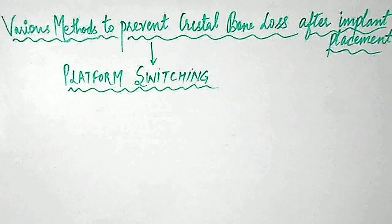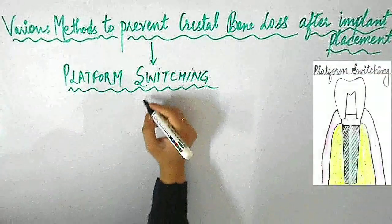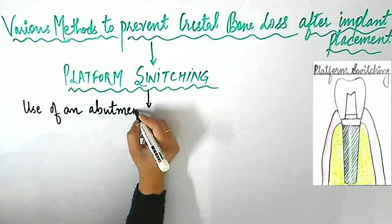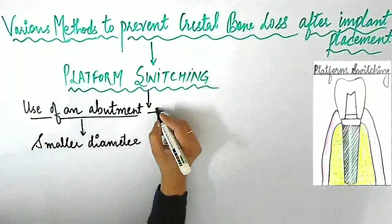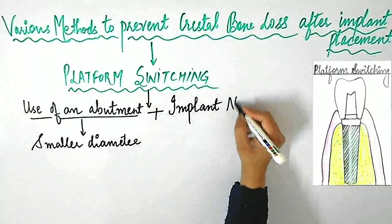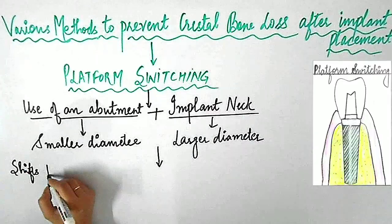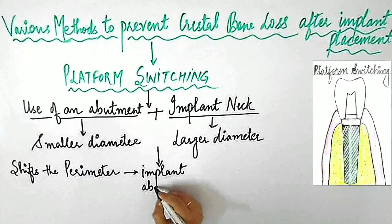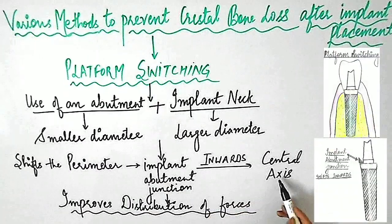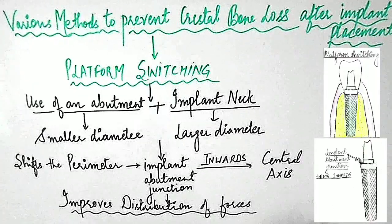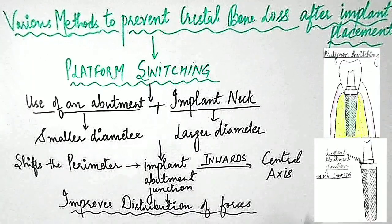To prevent crestal bone loss after implant placement, various methods have been described in the literature, and platform switching is one of those approaches. Platform switching refers to the use of an abutment of smaller diameter connected to an implant neck of larger diameter, as you can see in this picture. This connection shifts the perimeter of the implant-abutment junction inwards towards the central axis of the implant, hence improving the distribution of forces.